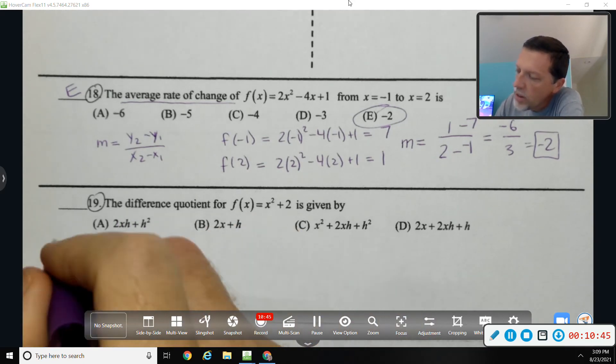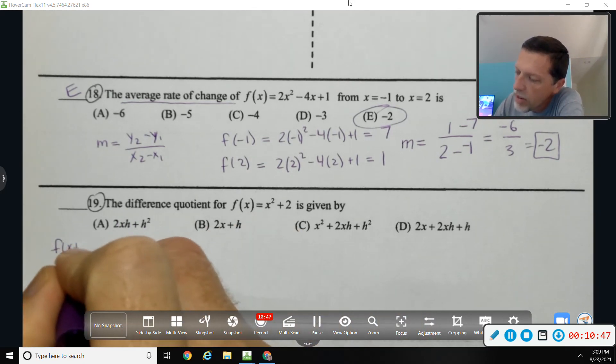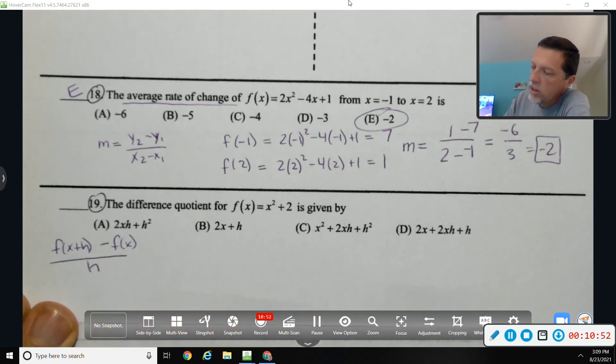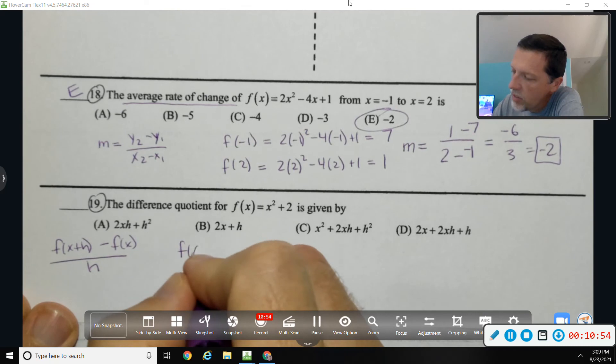19: difference quotient. Difference quotient—oh, we did not give it here, but we will give it on the test. F of x plus h minus f of x all over h. So I need to first find f of x plus h.